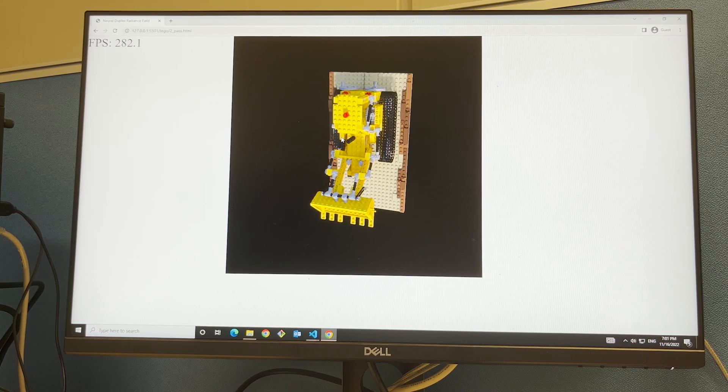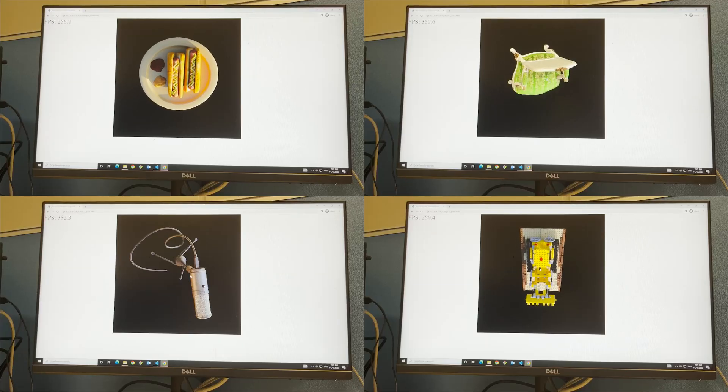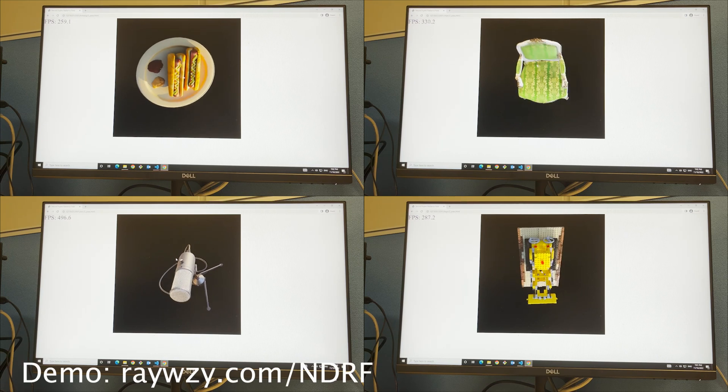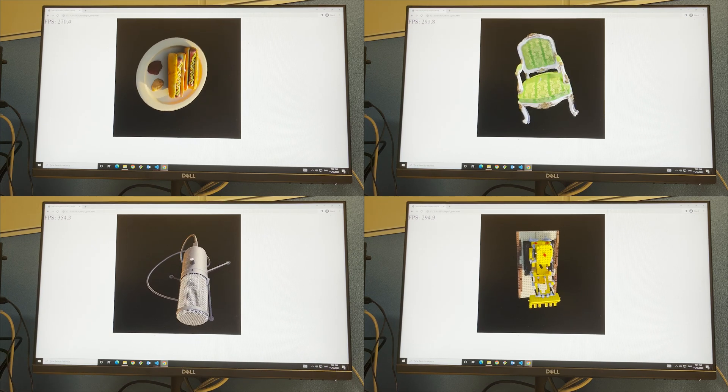Here we show the real-time cross-platform WebGL viewer running in a web browser. Our method could render around 300 frames per second, meanwhile preserving the view-dependent effects and high fidelity.